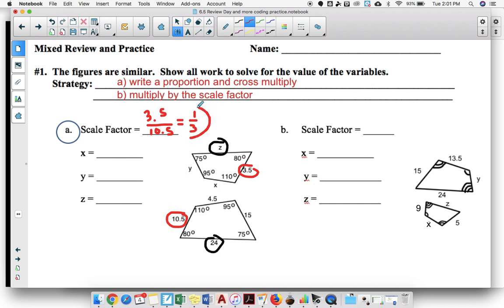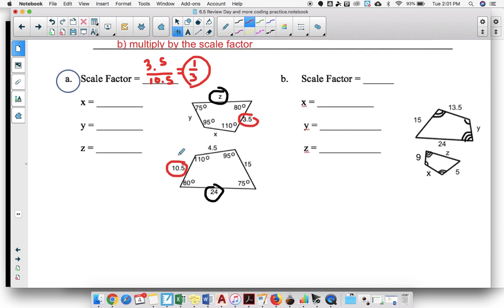You should hopefully notice this reduces to a third. If not, you can stick with 3.5 over 10.5. That means the smaller one is a third the size for each of the lengths as the larger. So if you take this times a third you get 3.5.